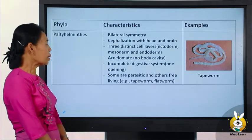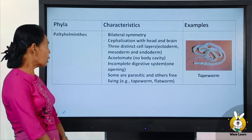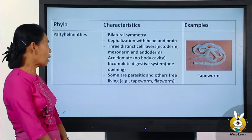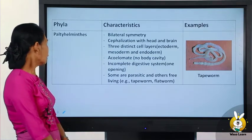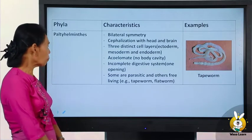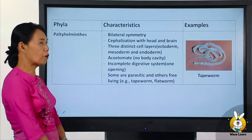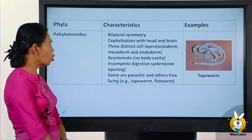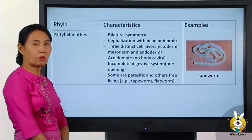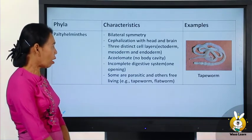They have an incomplete digestive system. Some are free-living and some are parasitic, such as the fluke worm.